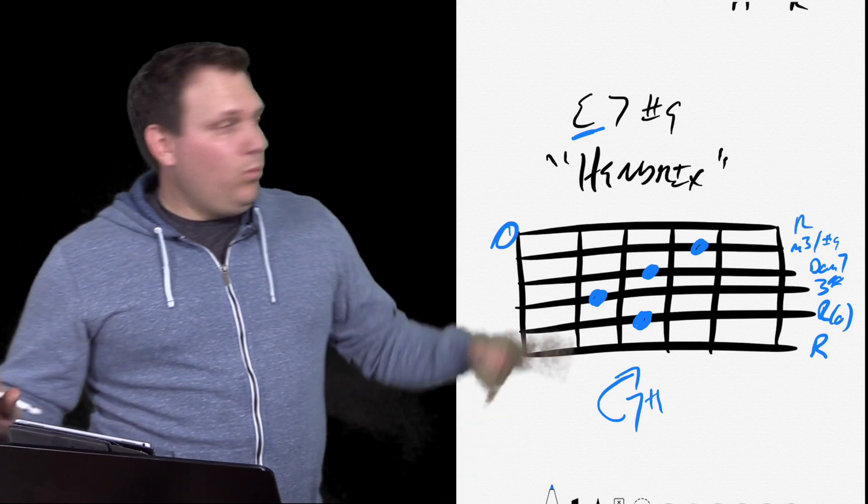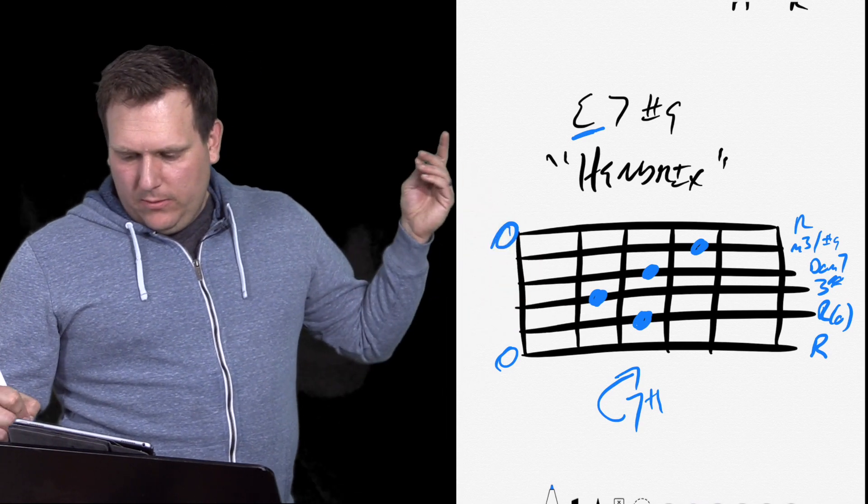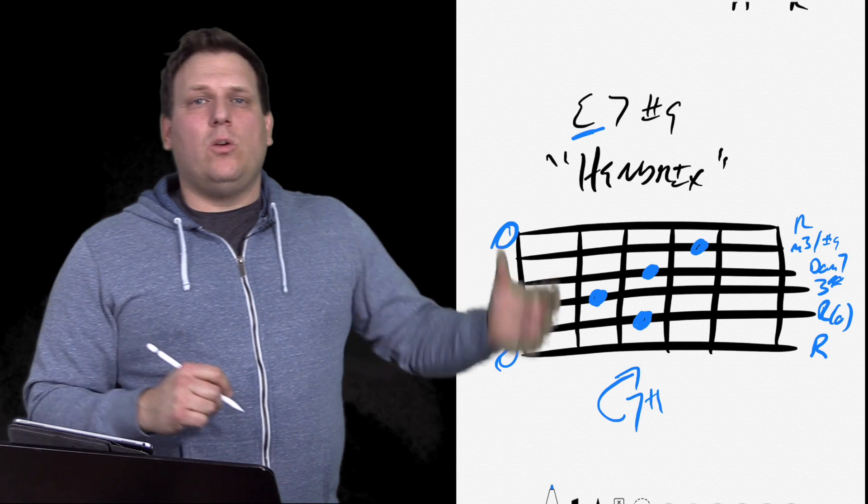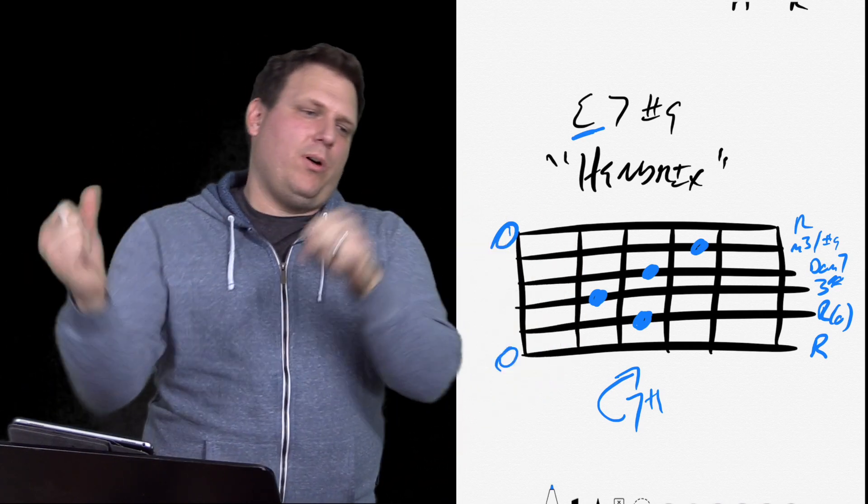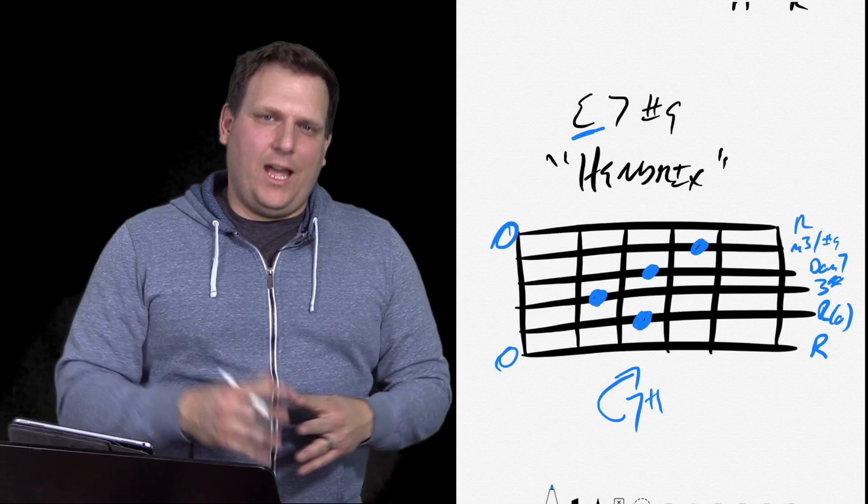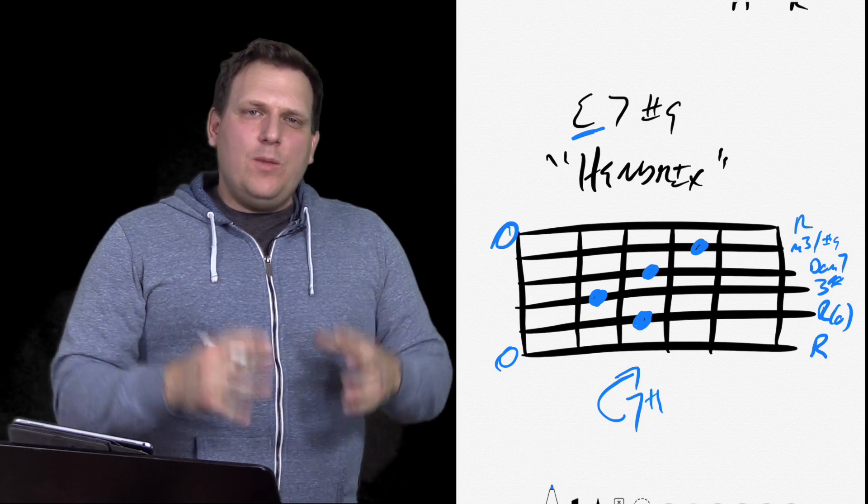Okay. So we have root, root, the third, the dominant seven, and the sharp nine, and then a root again. So all that put together in a pot, swirled together, that makes that E seven sharp nine. Okay. Deep breath.